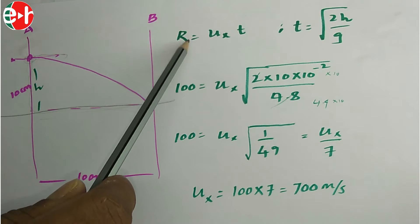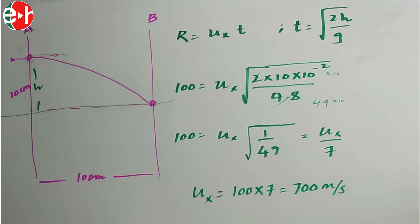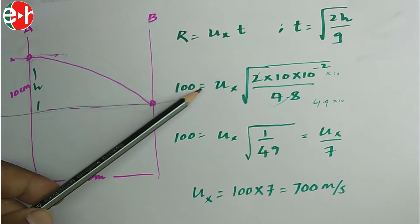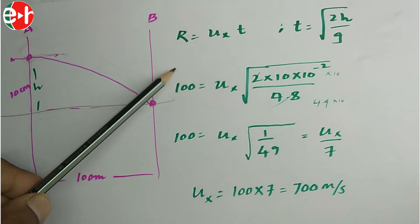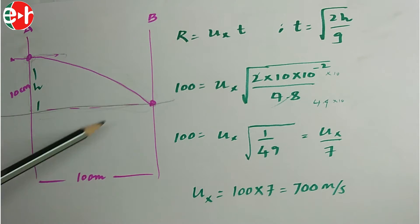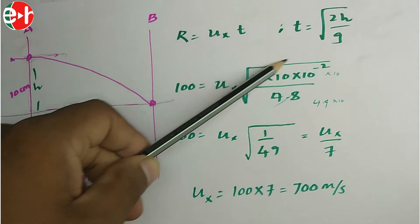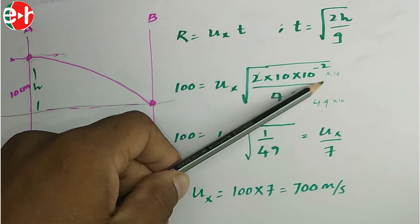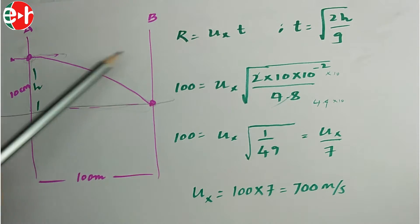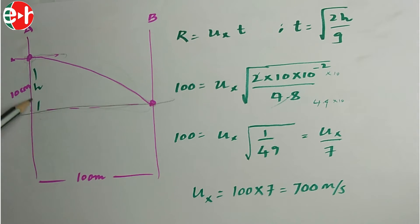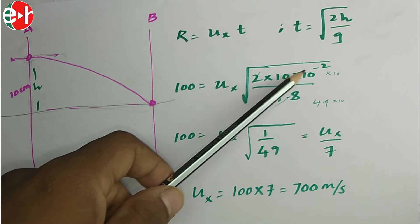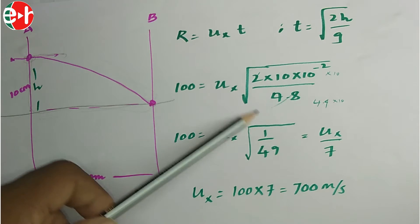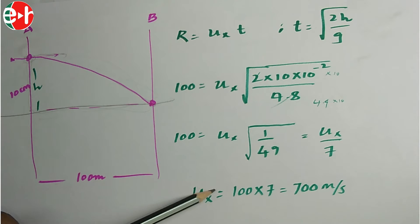Using range R = Ux·t where t = √(2H/g), with R = 100 m and H = 10 cm = 0.10 m, upon simplification we get Ux = 700 meters per second.